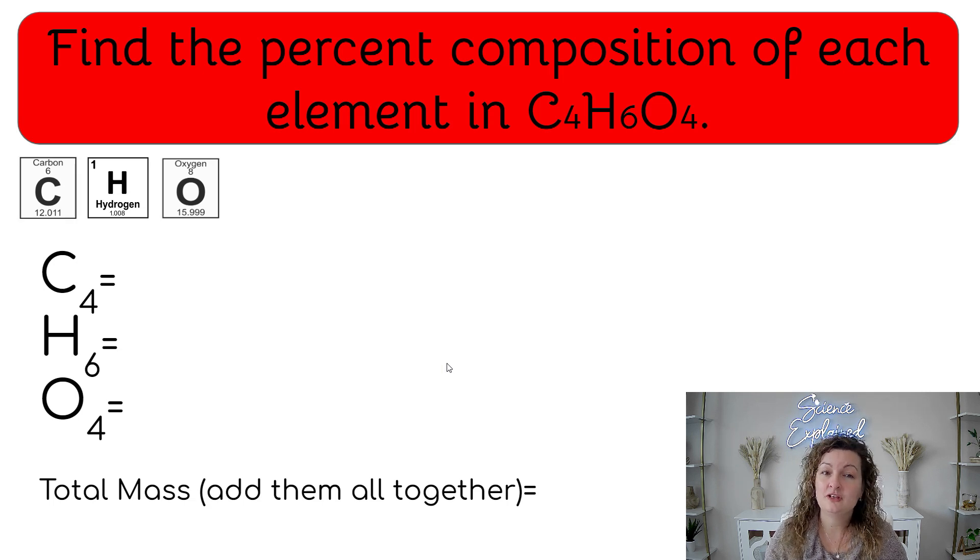So let's go ahead and look at this. Find the percent composition of each element in C4H6O4. The very first thing you need to do is go to the periodic table. Look up each of your elements and get the mass of each one. So here we go. We have carbon, hydrogen, and oxygen right here for you. But we have a different amount of each of these. We have four carbon, six hydrogen, and four oxygen.